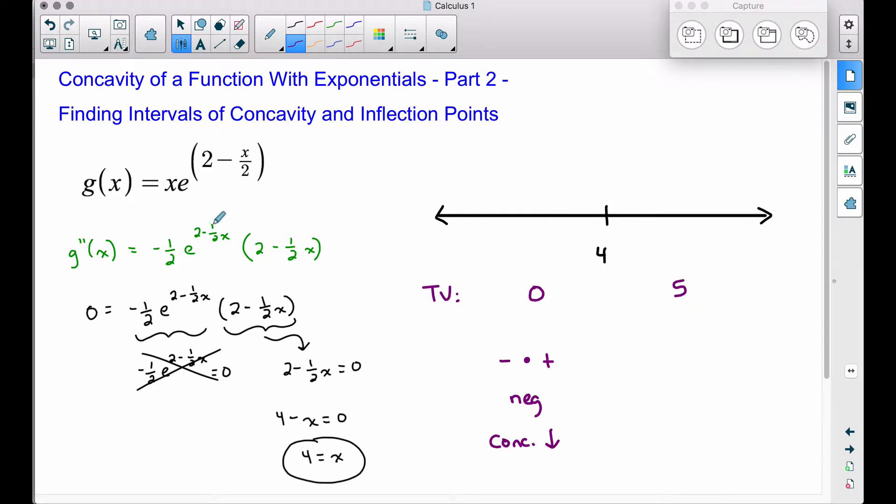Let's check out five now. If we plug five into this, we're still going to get a negative number here. You may notice, e to the two minus half of five. Well, half of five is 2.5. Two minus 2.5 is negative one half. But the thing is, e to any power, whether it be positive or negative, is still going to be a positive number. Times a negative one half, we have a negative, times, what do we get when we plug five into here? Two minus 2.5 is going to be a negative number. So a negative times a negative is going to be a positive. This implies that our function is concave up to the right of four.